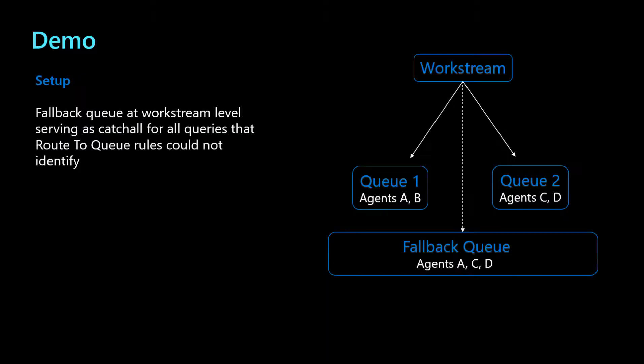That way, all queries will get assigned to agents in case queue identification fails or the routing service encounters any errors. And she can add agents to this queue such that most topics she could think of could be covered between these agents.